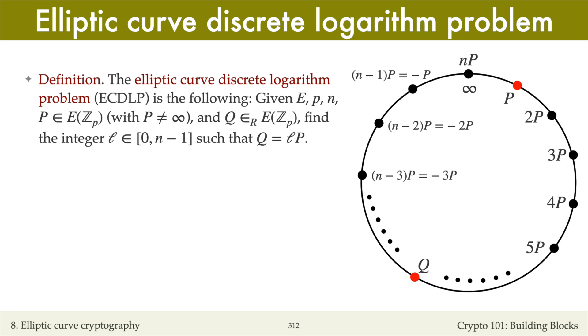Our task is to find the unique integer l between 0 and n minus 1 such that Q equals l times P. In other words, the problem asks to find the number of times that P was added to itself to get the point Q.